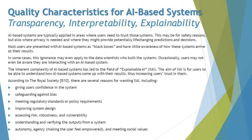According to the Royal Society, there are several reasons for wanting XAI — that is, why we should have explainable AI that gives users clarity about what the system is doing and how. These reasons include: giving users confidence in the system; safeguarding against bias and deviations; meeting regulatory standards or policy requirements, so that regulatory bodies can understand and approve the architecture behind the product; and improving overall system design by understanding the AI-based system. Additionally, assessing risk, robustness, and vulnerability is very important.